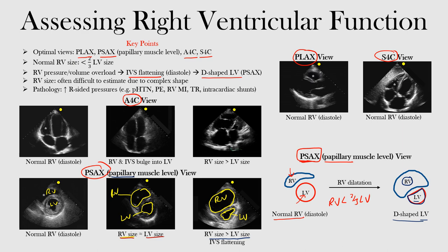Notice the intraventricular septum flattening here. In the earlier image it was still a little round, but in the third image on the right, the right ventricle is much larger and flattening the septum. Notice that the intraventricular septum — the division between the right and left ventricle — that line is now flat. That's what we call the IVS, the intraventricular septum, and this is now flattened. You get that D-shape of the left ventricle, what we call the D-shaped left ventricle.